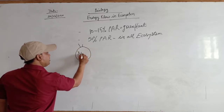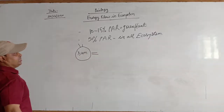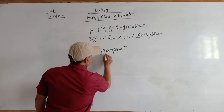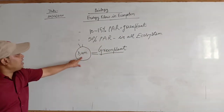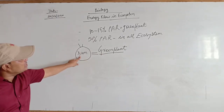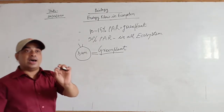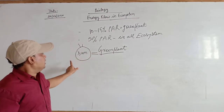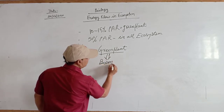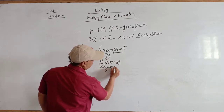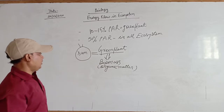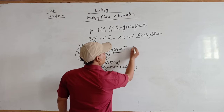When the Sun provides solar energy to green plants, these green plants capture the solar energy in the form of food and perform photosynthesis by using solar energy and inorganic materials drawn by their roots from the soil. In this way, through photosynthesis, green plants synthesize biomass, which we can also call organic matter.